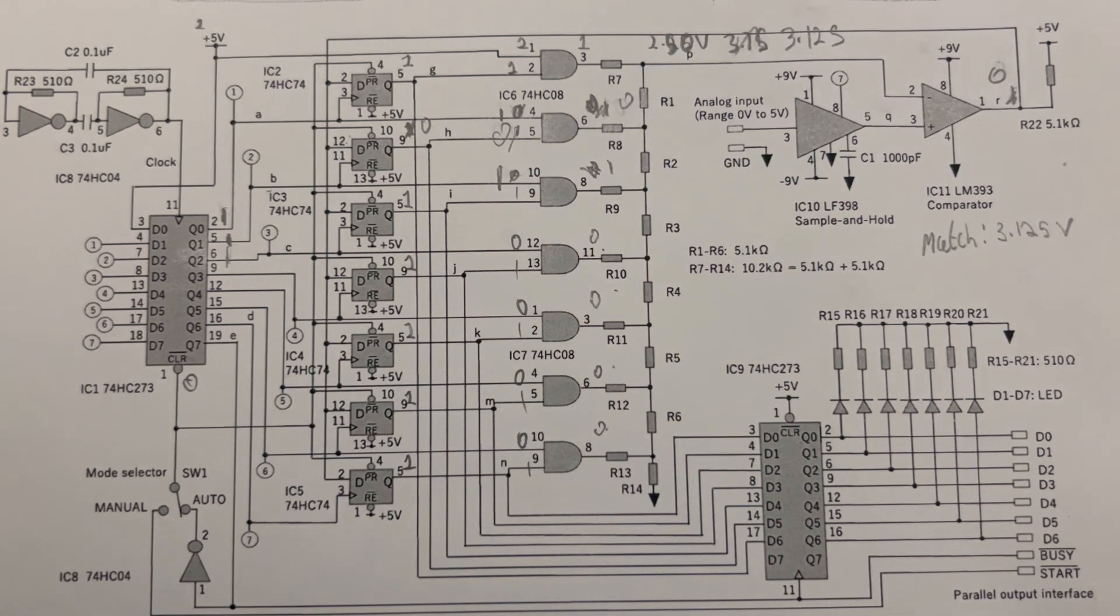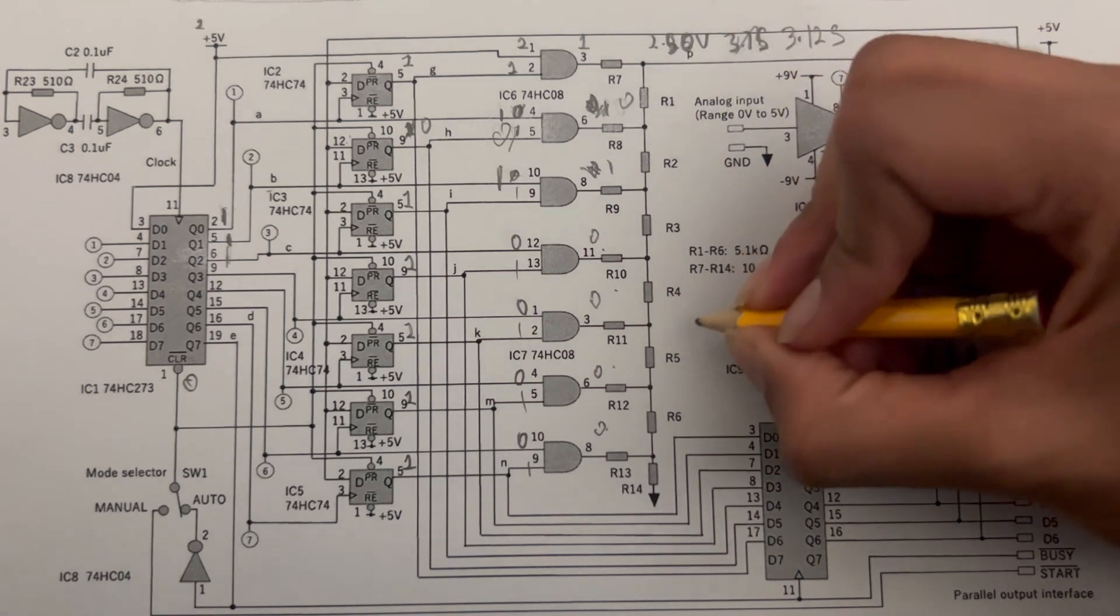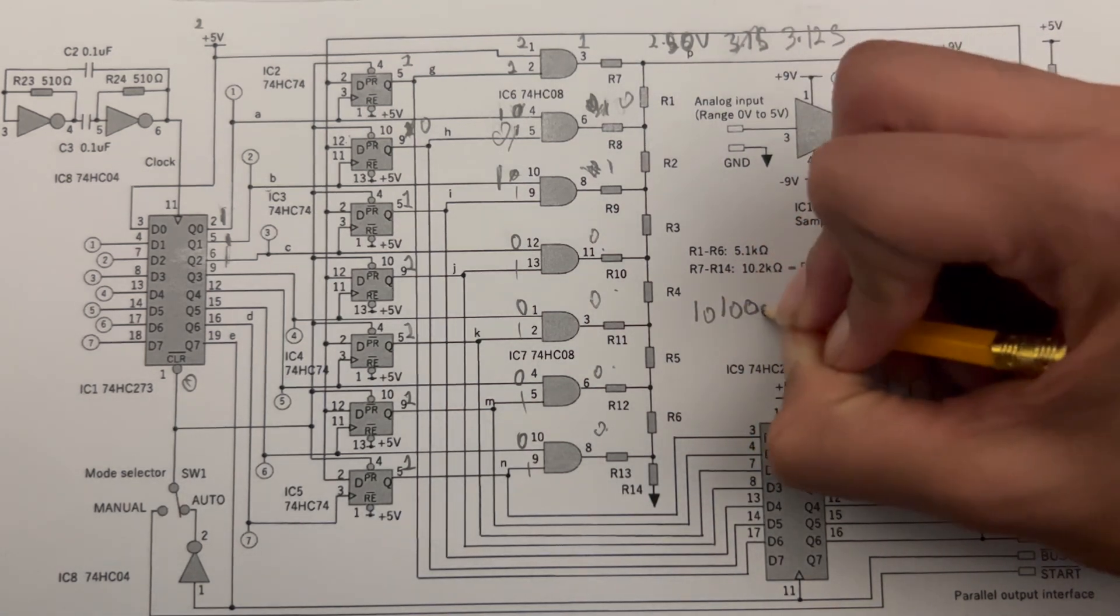That will cause the other flip-flops to be low. Through this, we can understand that the final binary voltage value would be 1, 0, 1, 0, 0, 0, 0.